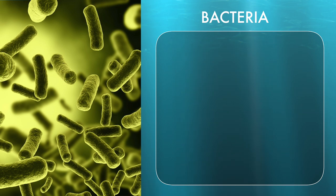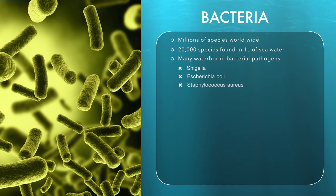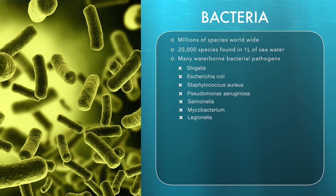Examples of bacteria: there are many millions of species worldwide, with 20,000 species found in one litre of seawater. Many waterborne bacterial pathogens include Shigella, Escherichia coli, Staphylococcus aureus, Pseudomonas aeruginosa, Salmonella, and Mycobacterium legionella.